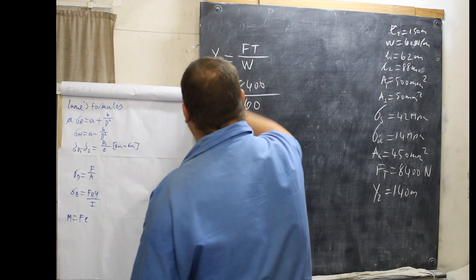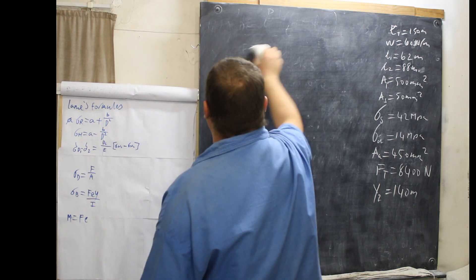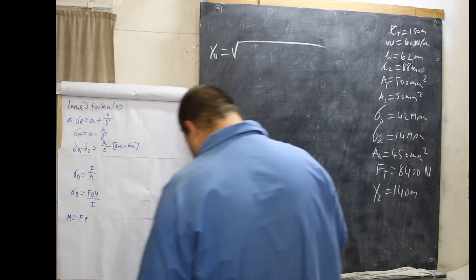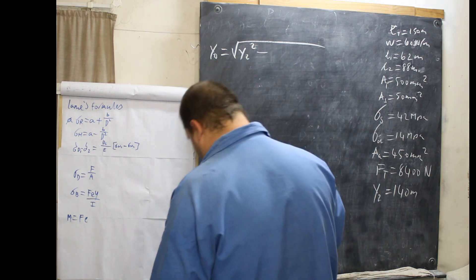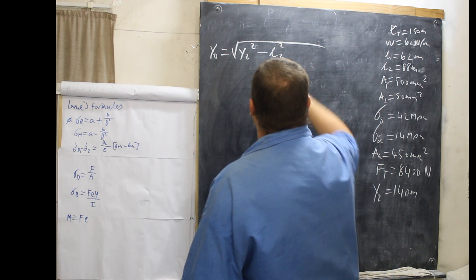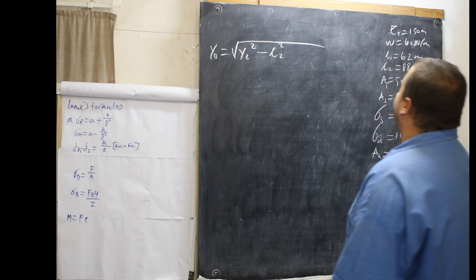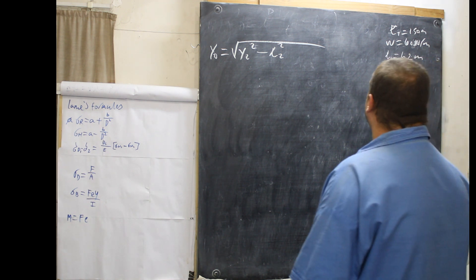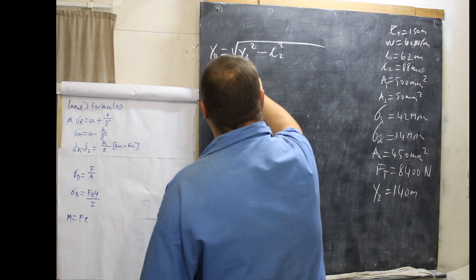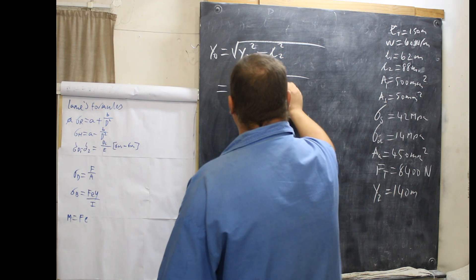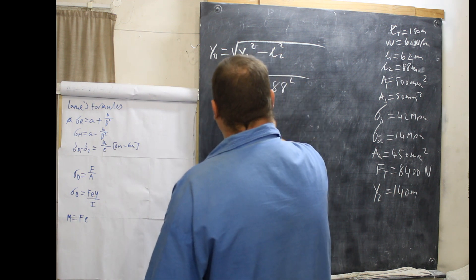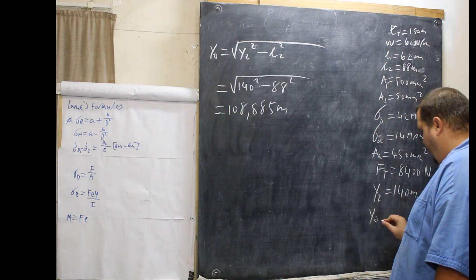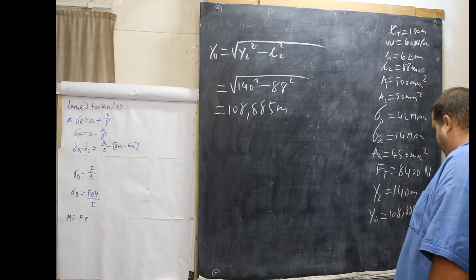Now we can work out Y0, because we have L2 and Y2. Y0 equals the square root of Y2 squared minus L2 squared. L2 is 88 metres — that is 150 minus 62. So Y0 equals the root of 140 squared minus 88 squared, which equals 108.885 metres.